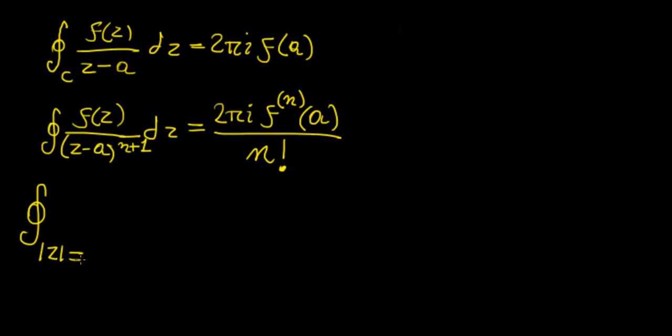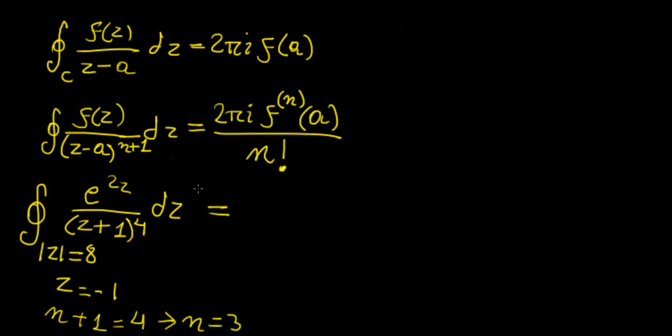Let's have the following integral. Let's have the curve z equals 8, so that's just a circle of radius 8 centered at the origin, and we're going to have the function e^(2z) over (z+1)^4. So now, what do we recognize about this? This has a singularity at z equals minus 1, so our a is going to be minus 1 in this case. And then the function itself is e^(2z), and now our n+1 is going to be equal to 4, which means that n has to be equal to 3.